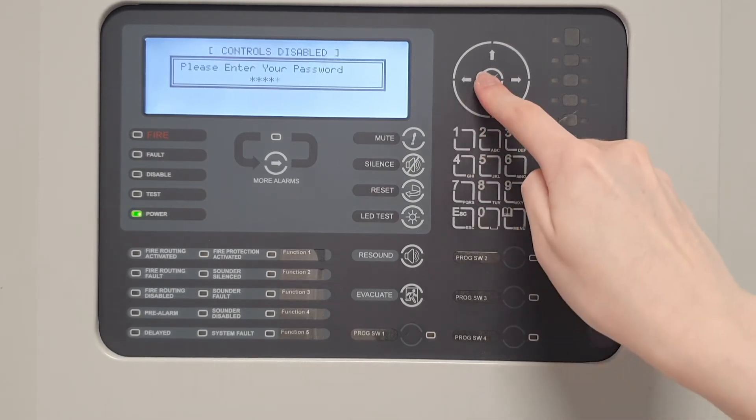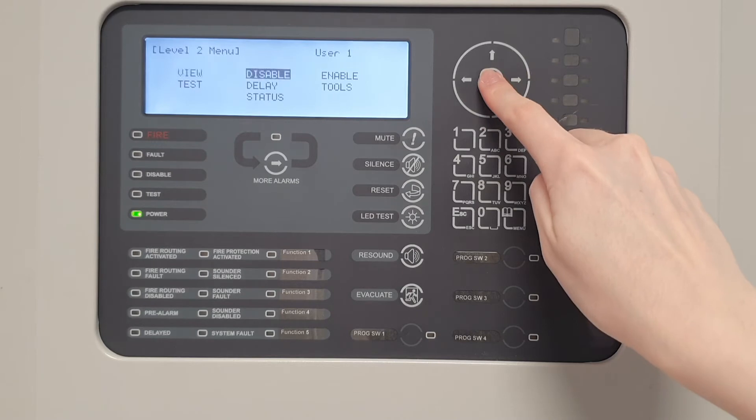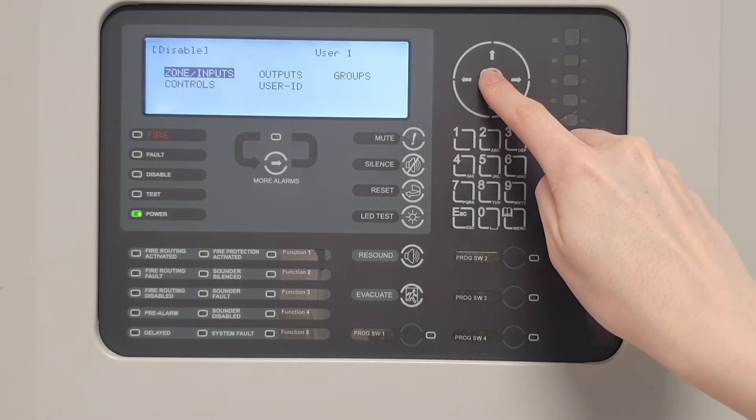Once in Level 2, scroll to disable. In this menu, there is the option to disable entire zones, specific inputs, outputs and pre-programmed groups. To disable all inputs within a zone or to disable specific input devices, select Zones, Inputs.